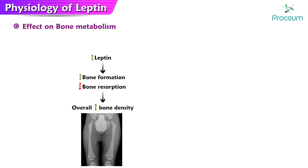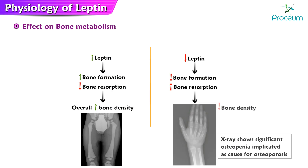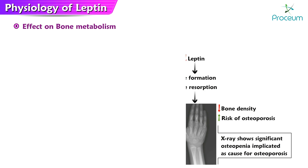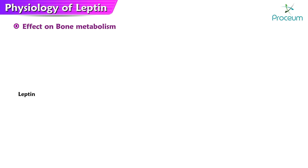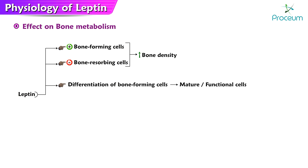an overall increase in bone density. On the other hand, low levels of leptin have been linked to decreased bone formation and increased bone resorption, leading to a decrease in bone density and an increased risk of osteoporosis. Leptin has been shown to stimulate the production of bone-forming cells and inhibit the production of bone-resorbing cells, and also promotes the differentiation of bone-forming cells into mature functional cells that are able to produce bone matrix.